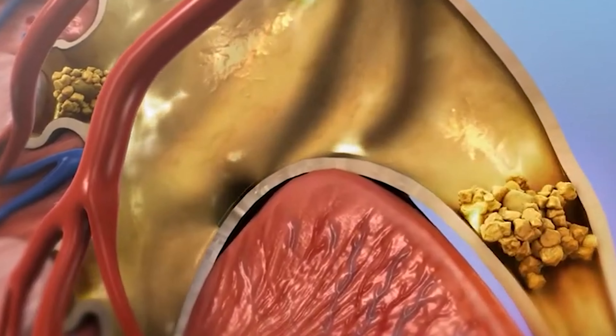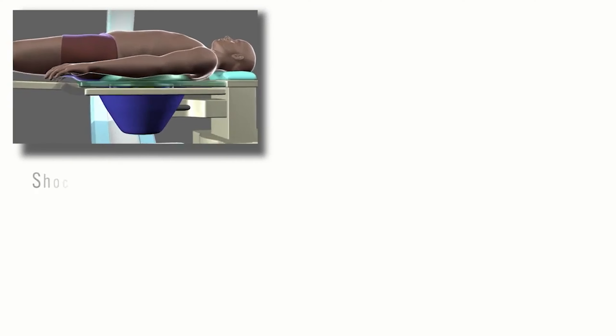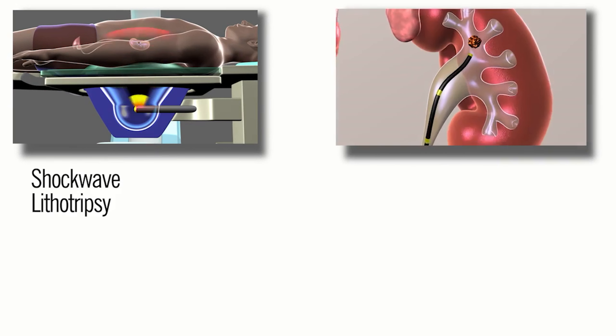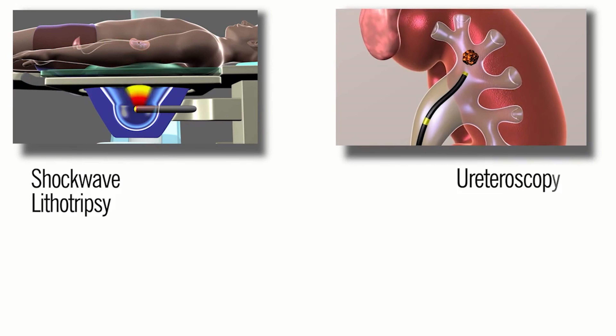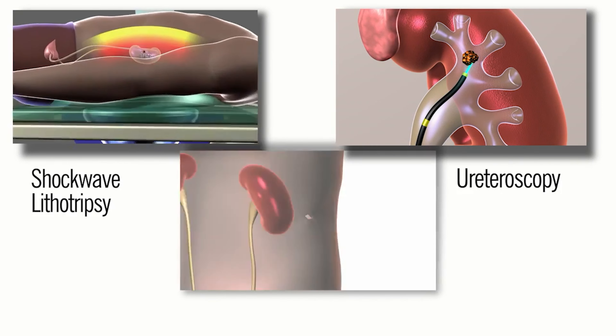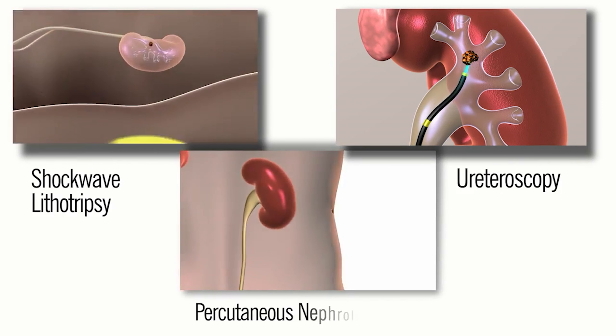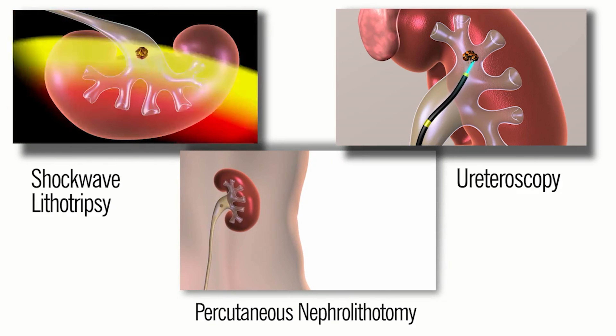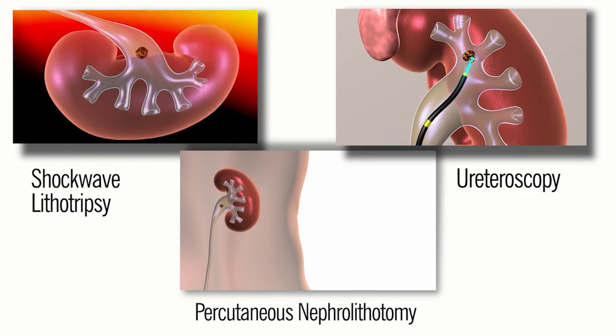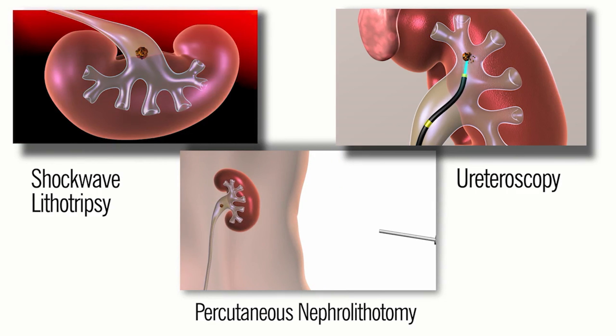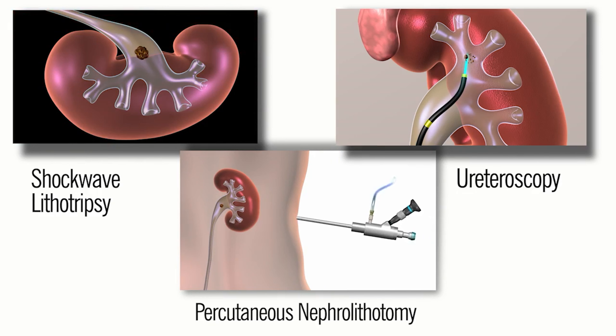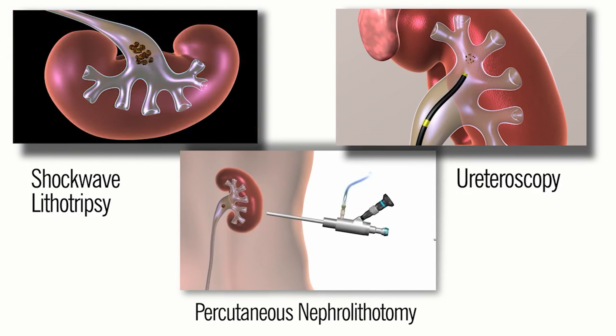For larger stones or stones causing complications, medical intervention is necessary. The first option is extracorporeal shock wave lithotripsy — a non-invasive treatment that uses sound waves to break large stones into smaller pieces before they are passed through urination. Another procedure is ureteroscopy, where a thin tube is inserted into the ureter and bladder to locate and remove the stone. There is also percutaneous nephrolithotomy — 'percutaneous' meaning through the skin — where a small incision is made in the back to remove the stone directly from the kidney.